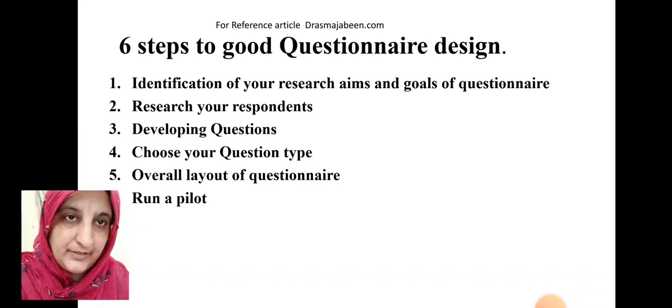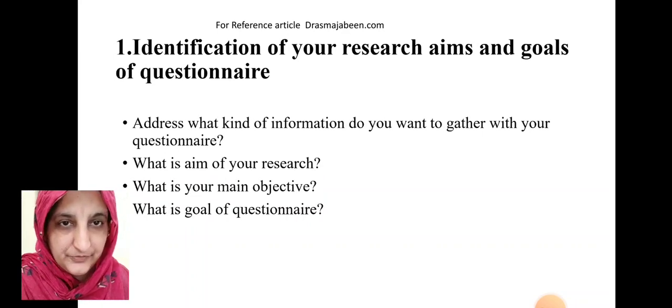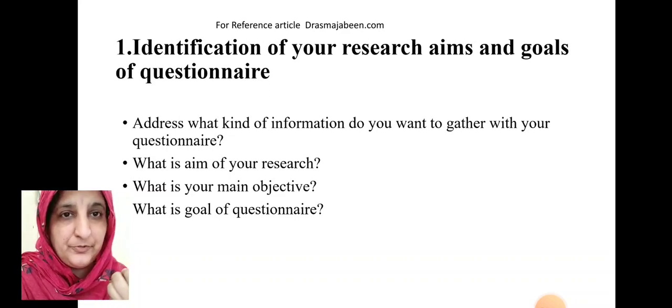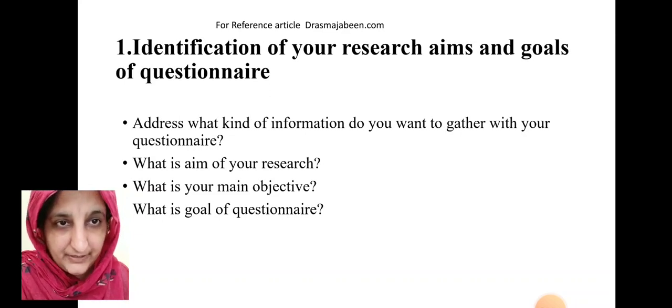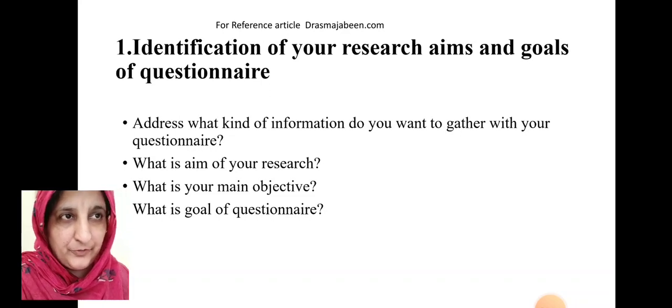First one is identification of research aims and goals of the questionnaire. For this step, you should address what kind of information do you want to gather with your questionnaire, what is your specific aim of your research, what is the main objective, and what is the goal of your questionnaire. You should be clear about aim, main objective, and goal of your questionnaire at the first step for identification of your research aims and the goals of questionnaire.